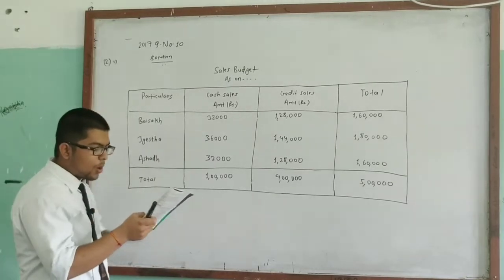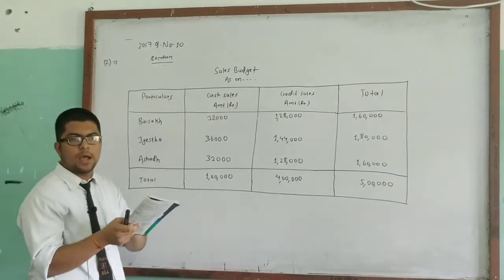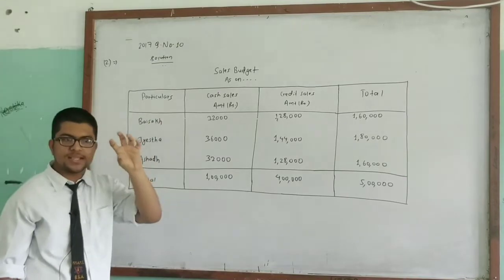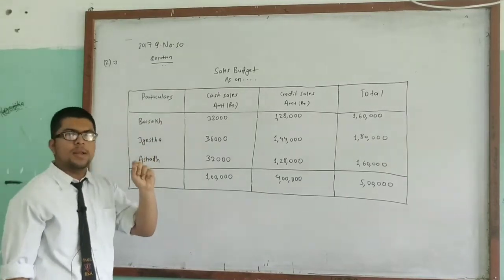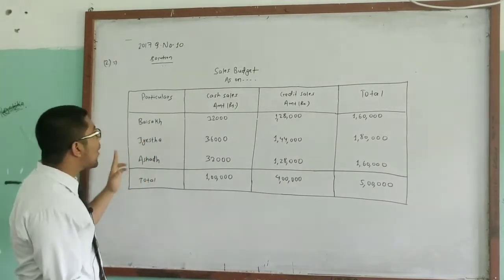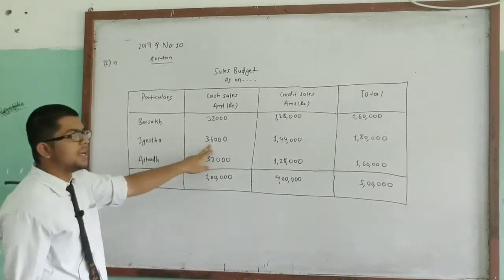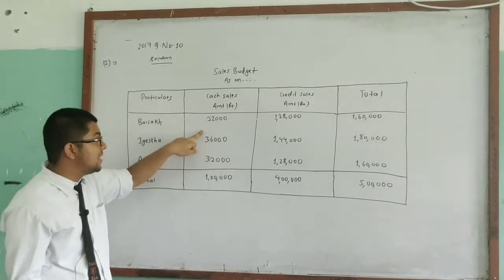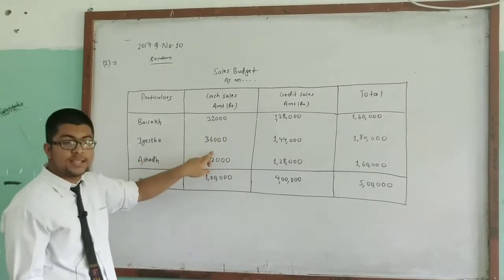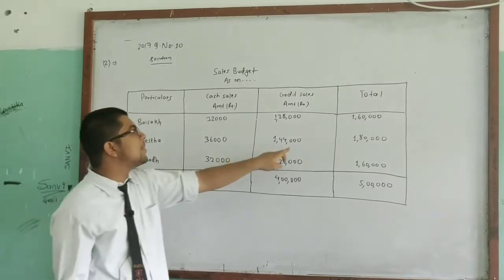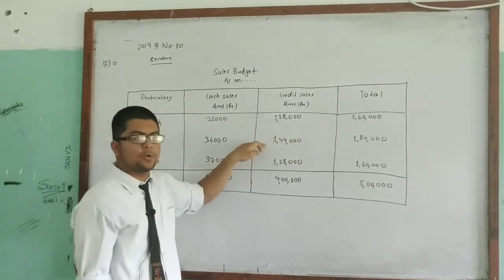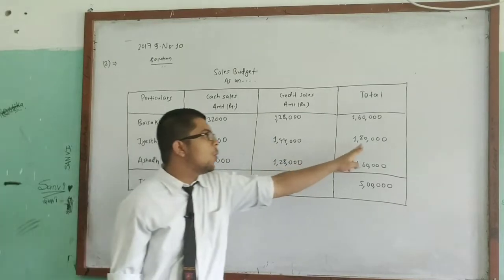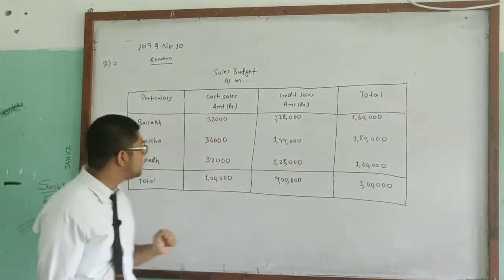For Jestha, 18% of Rs. 10 lakh total sales equals Rs. 1 lakh 80,000. Of this, 20% is cash sales, which is Rs. 36,000. And 80% is credit sales, which is Rs. 1 lakh 44,000. So total sales for Jestha is Rs. 1 lakh 80,000.